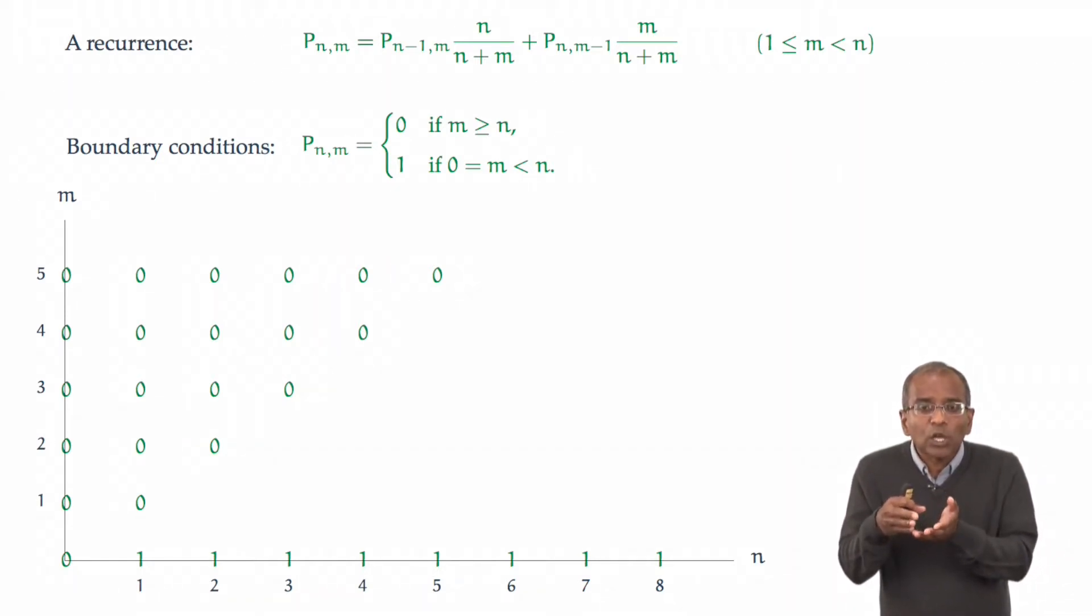In fact, everywhere along a 45-degree diagonal, the probabilities are 0. So everything at a diagonal and above, you have 0 probability. These are what the boundary conditions give us.